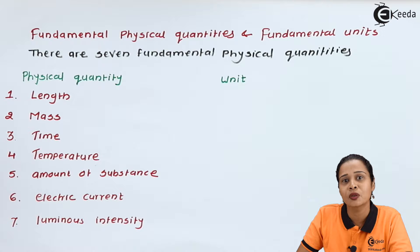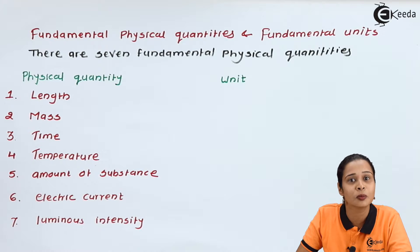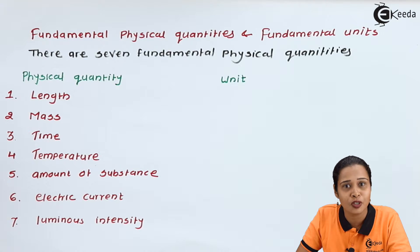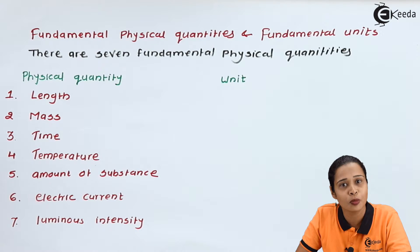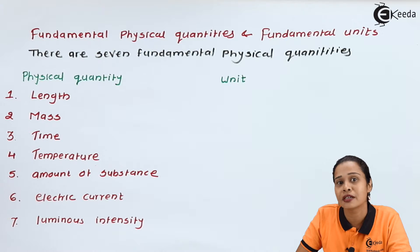We want to find out the area of a classroom. We can find out that because we know the formula: area is length into breadth. Suppose we want to find out the density of any material. We can find out that because density is mass per unit volume. Mass we can find out, as well as volume — we have a formula for volume also. So these are quantities which are measurable, and these quantities are called physical quantity.